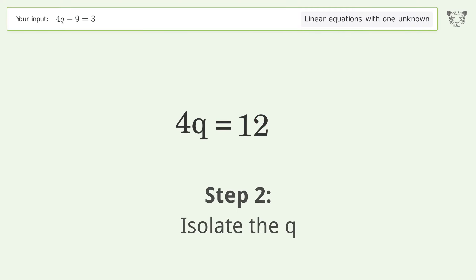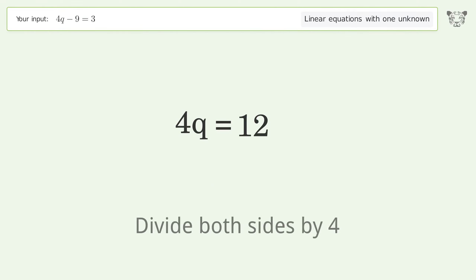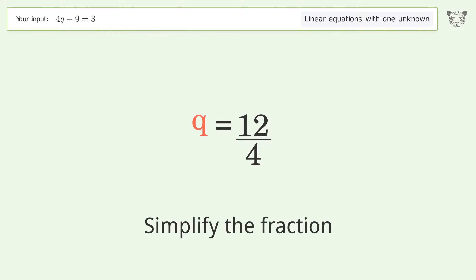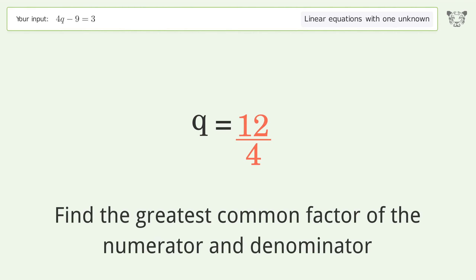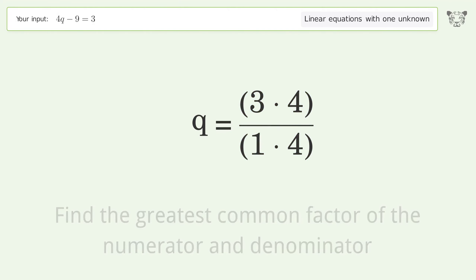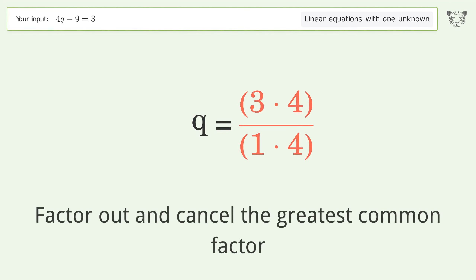To isolate q, divide both sides by 4 and simplify the fraction. Find the greatest common factor of the numerator and denominator, then factor out and cancel the greatest common factor.